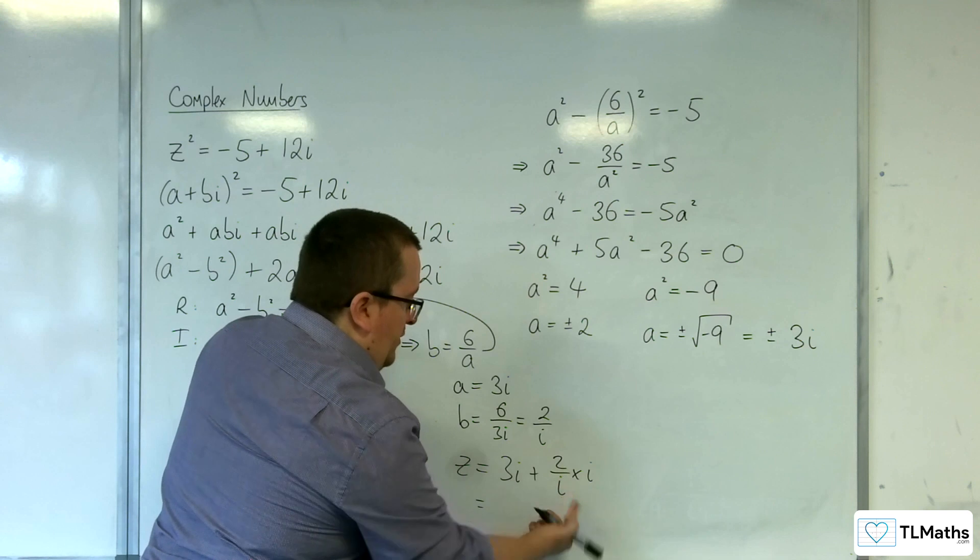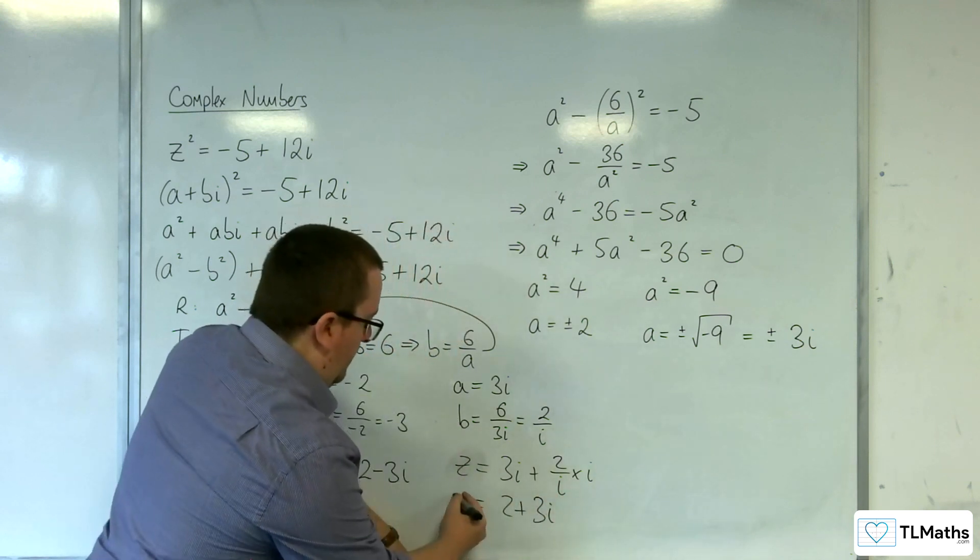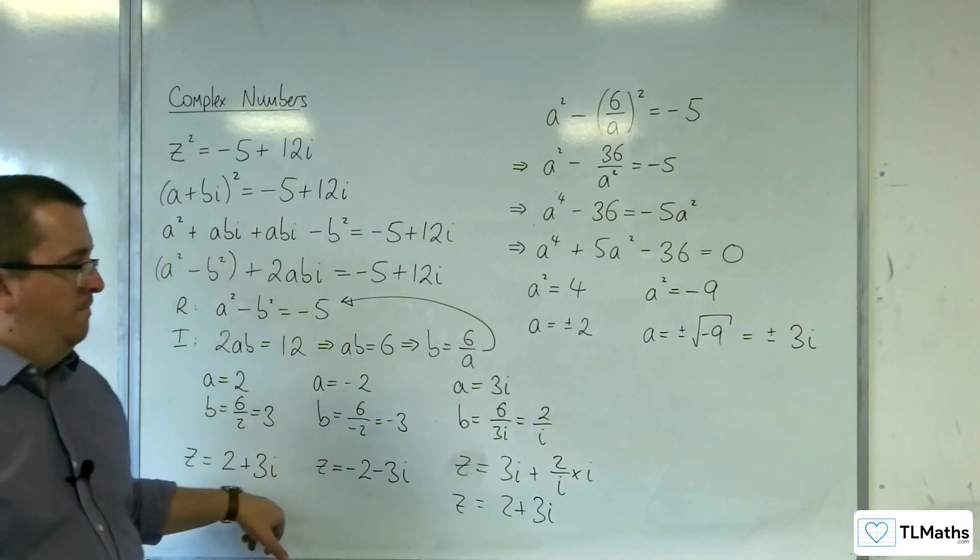So, 2 over i times i is just 2. And you get the 2+3i, which we had there.